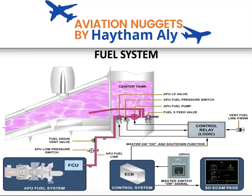The low pressure valve also closes in abnormal situations, such as a fire situation. When you release the APU fire pushbutton, it will close this valve and the APU will shut down. This is called emergency shutdown. In that case, no cool-down cycle will happen, even if the APU is operating with a bleed load demand on it.